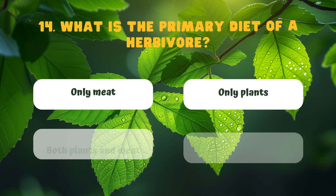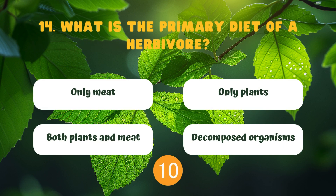What is the primary diet of a herbivore? Only meat. Only plants. Both plants and meat. Decomposed organisms.